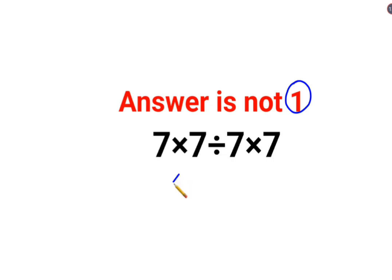See, we have 7 multiplied by 7 which is 49, and here also we have 7 multiplied by 7 which is 49. So 49 divided by 49, the answer is 1.